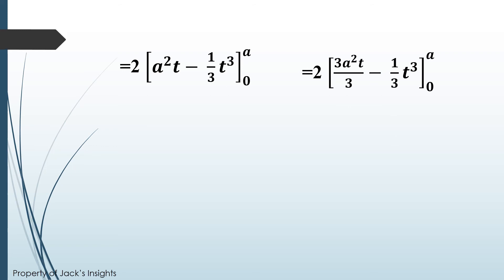Next, substitute the upper limit to the function minus its value at the lower limit which is 0. Simplify. Now we have two times two a cubed over three. So the answer is four thirds a cubed.